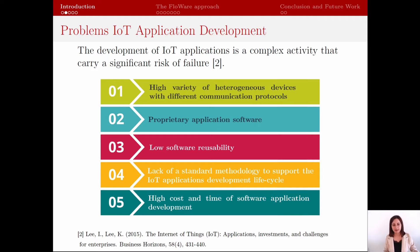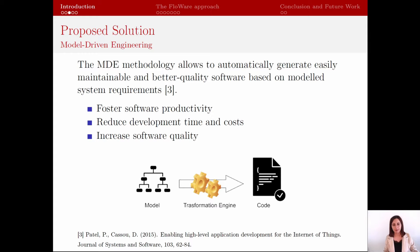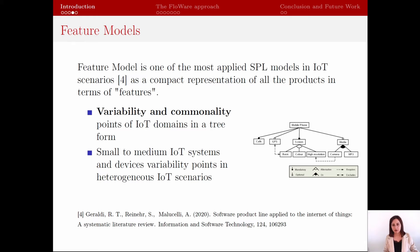More in general, there is a lack of standard methodology to support IoT application development that could resolve all the problems mentioned above. For these reasons, we propose a novel approach based on model-driven engineering methodology. The model-driven methodology allows fostering software productivity and reducing development time and costs. This methodology enables the automatic generation of high-quality code based on model system requirements. In particular, to model the system requirements, we decide to use feature models, which is a model under the software product line paradigm. This model is commonly used in IoT domains to represent all the variability and commonality features that a family of systems or devices can have, and is usually represented in a tree form. From a configuration of a feature model it is possible to generate documents, models, or chunks of code to define a software application.